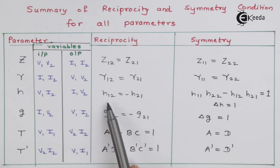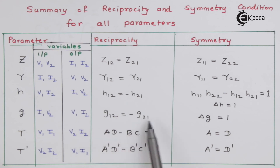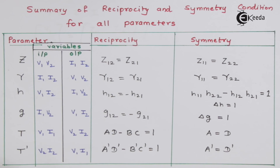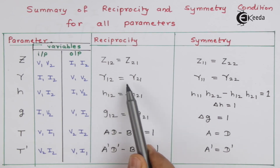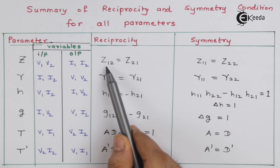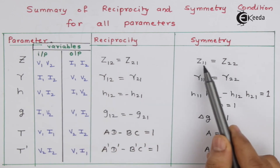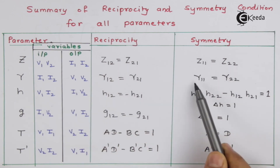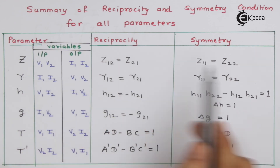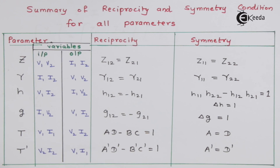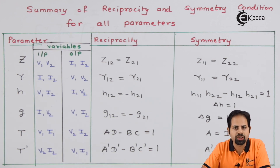Similarly, H12 and H21, G12 and G21 have a negative sign relationship; delta-H equal to 1, delta-G equal to 1, where these are determinant values. Then Y12 equal to Y21, and similarly Z12 equal to Z21. For symmetry, Z11 equal to Z22 and Y11 equal to Y22. This page and this table are very useful for solving numericals or for future reference. This is the end of this video — thank you very much for watching, stay tuned to Ikeda, and please subscribe.